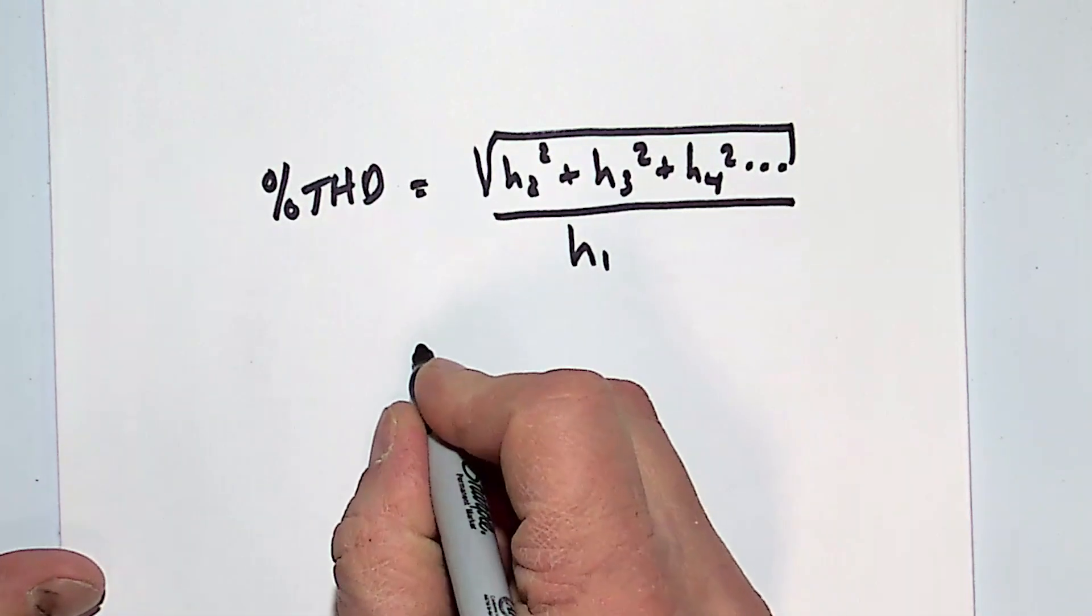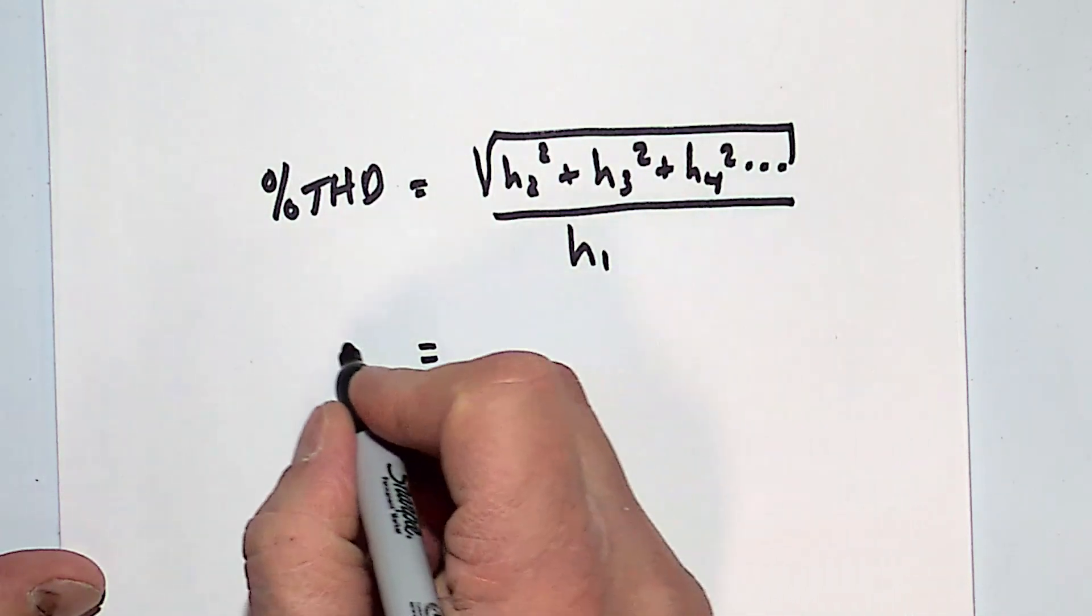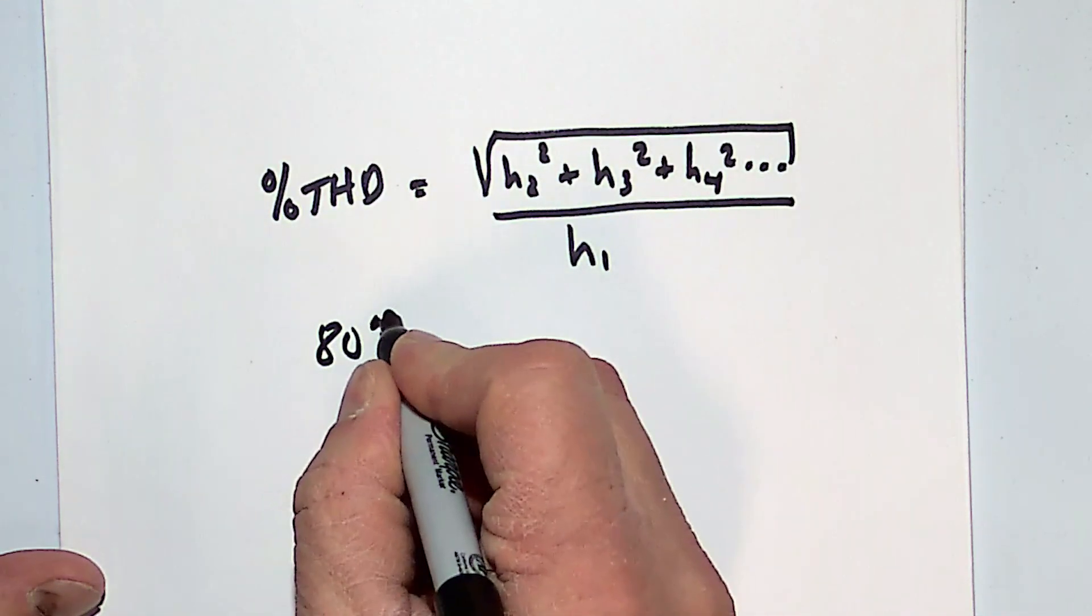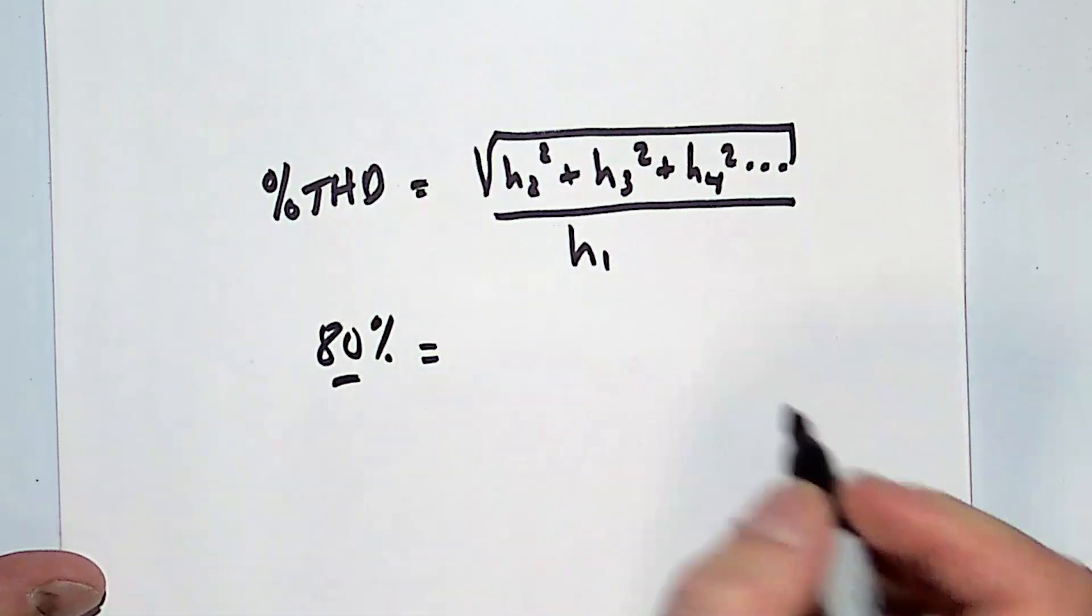So again, if I had, let's say, 80% distortion THD, how do I get there? Well, again, if my fundamental current was 100 amps, then the square root of the sum of the squares of this would be 80.